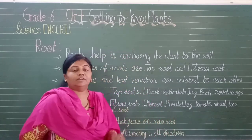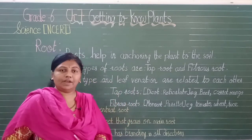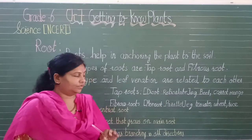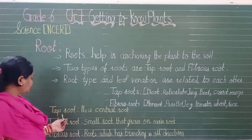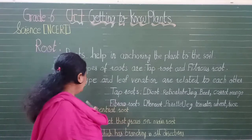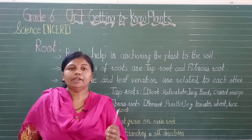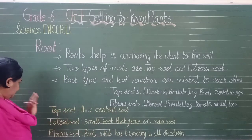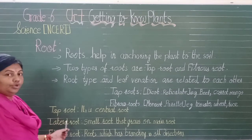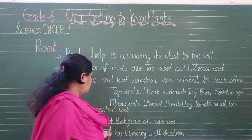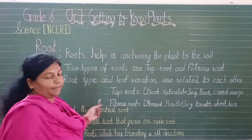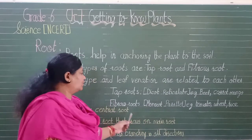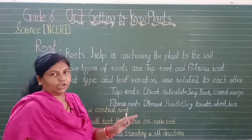If parallel venation is present, the plant always has fibrous roots. If reticulate venation is present, it always has a taproot. Taproot is the main or central root of the plant. Lateral roots are small roots that grow on the main root and fall in the category of taproot.